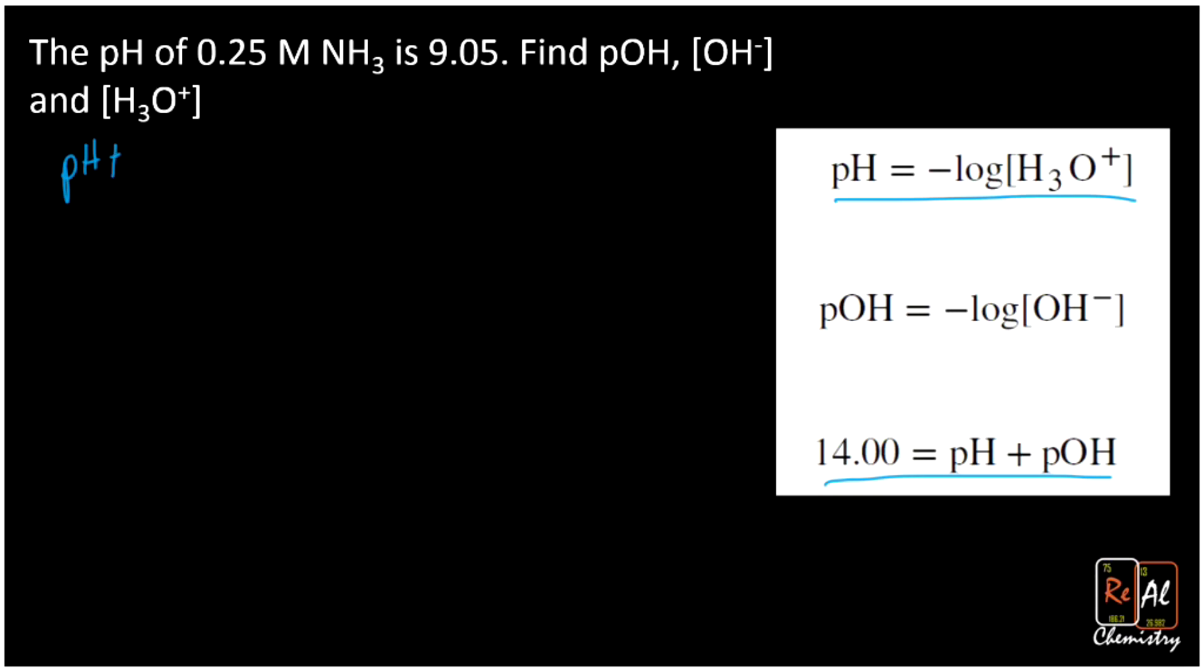So pH plus pOH equals 14, just like we saw before. And now we're going to, just like we did before, subtract pH from both sides. We're going to get pOH equals 14 minus pH. So pOH is then going to be equal to 14 minus 9.05. And for our pOH then we will get, wait for it, wait for it, 4.95.